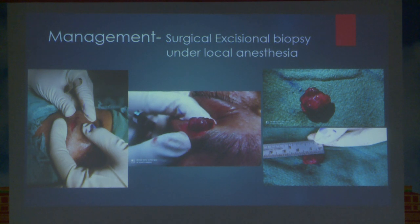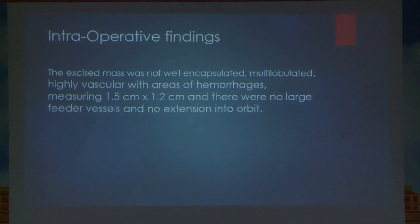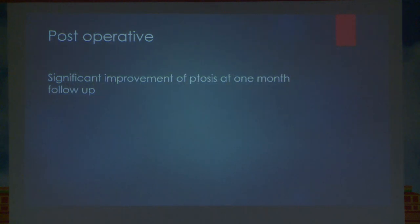An elliptical incision was given and with blunt dissection we went to the posterior border; the lesion was separated from the underlying structure. Intraoperative findings showed the excised mass was not well encapsulated, multi-lobulated, highly vascular with areas of hemorrhage, measuring approximately 1.5 by 1.2 cm; no large feeder vessels and no extension into the orbit. Postoperatively, significant improvement of ptosis was noted at one month follow-up.